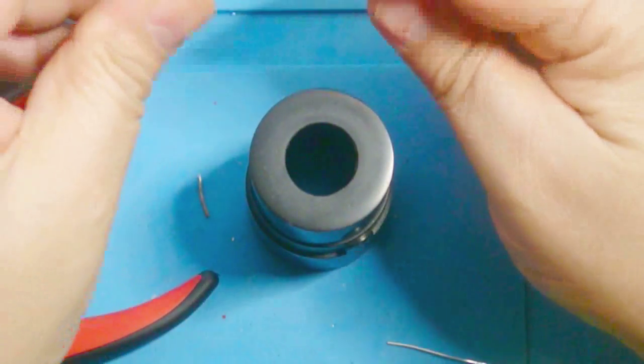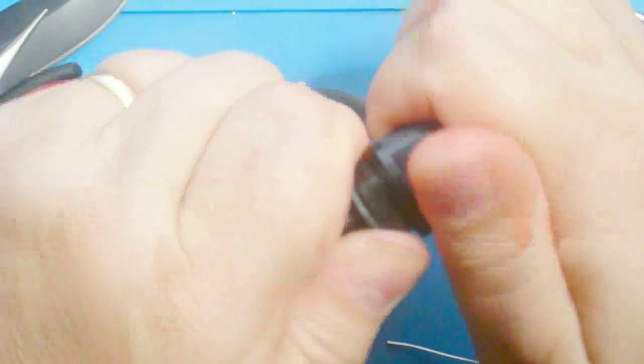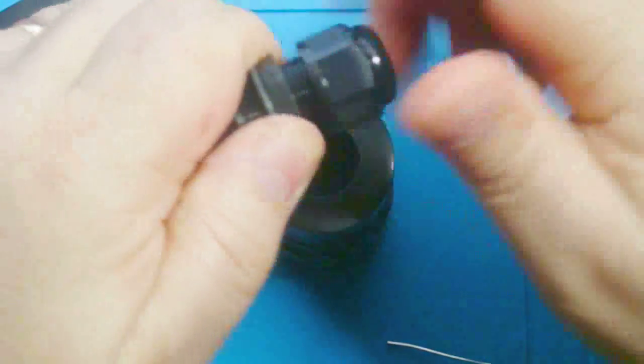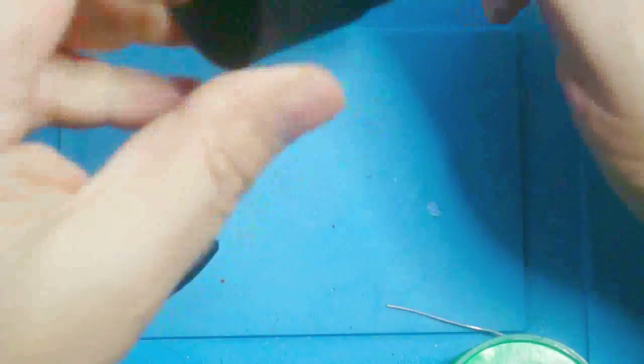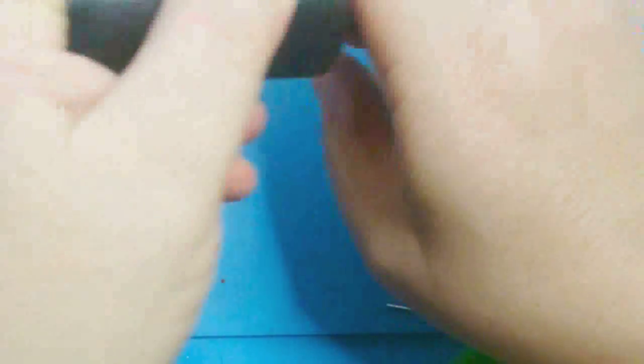We want to take the shell again. This is what's called a cable gland. This particular one is a PG-11. If you have some pliers, you might want to tighten this down. But hand tight can probably do it.